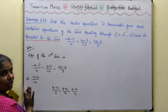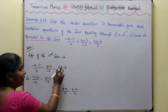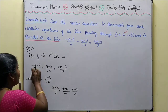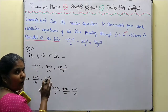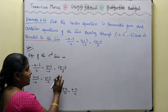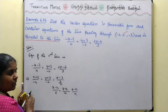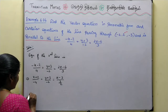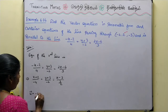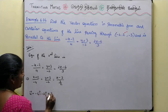We change the minus sign here. For y: y plus 3 by minus 2 — no problem. But for z, we have 2z - 6 by 3, so we divide the term. 2z - 6 by 3 becomes z - 3 by 3/2. We compare and get the u-vector: minus 4i-cap, minus 2j-cap, plus 3/2 k-cap.